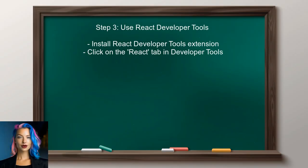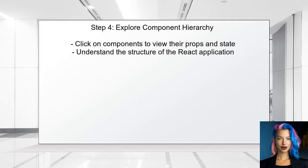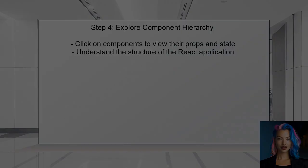To see the React components, switch to the React tab if available. This tab is part of the React Developer Tools extension, which needs to be installed beforehand. In the React tab, you'll be able to see the component hierarchy. You can click on each component to view its props and state, providing deeper insight into how the application is structured.